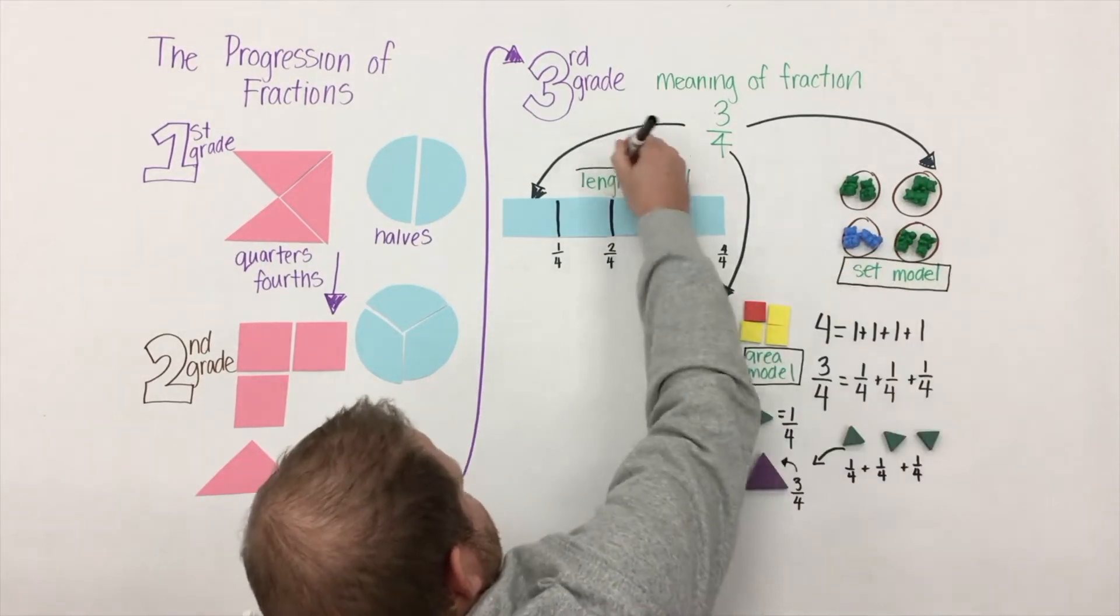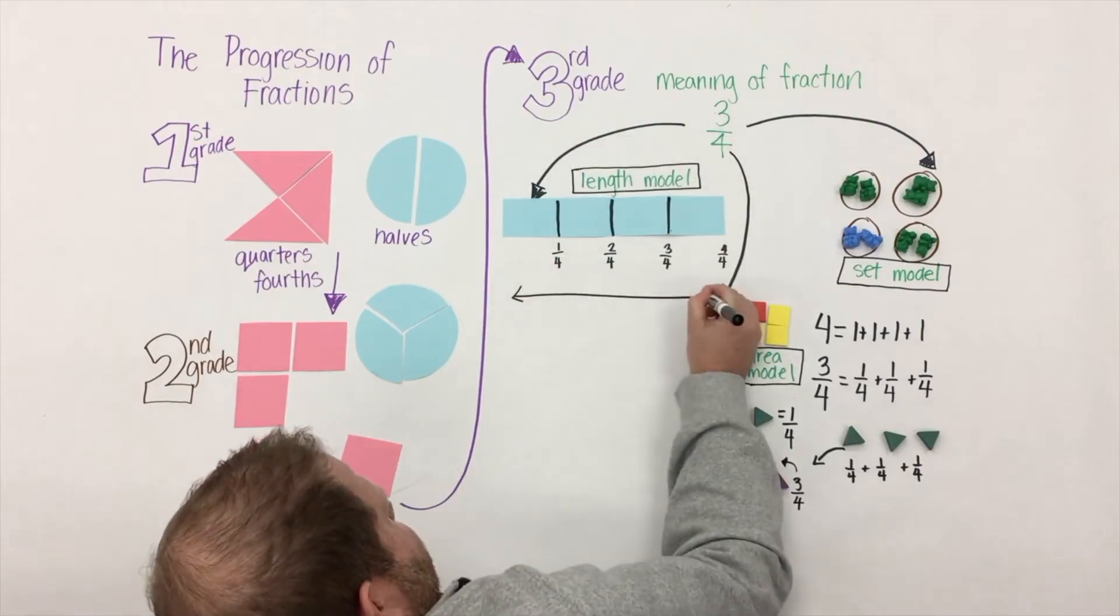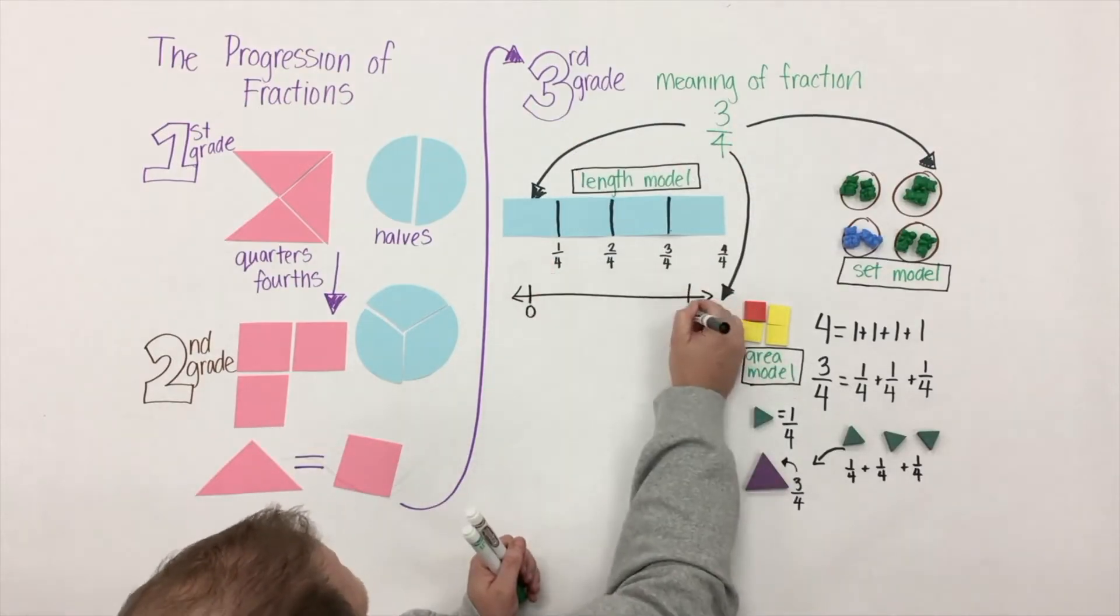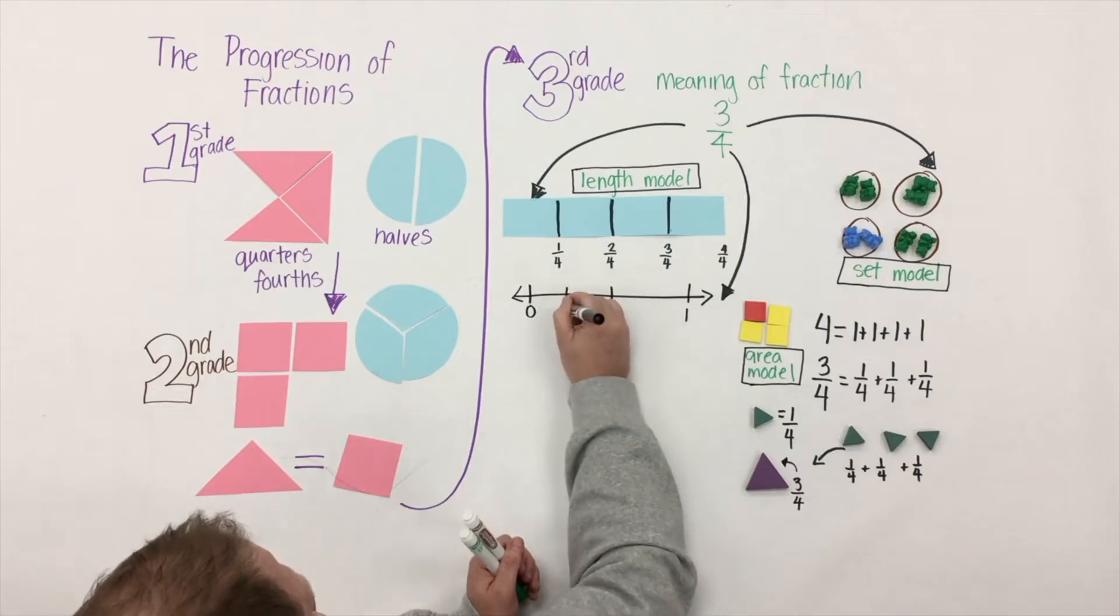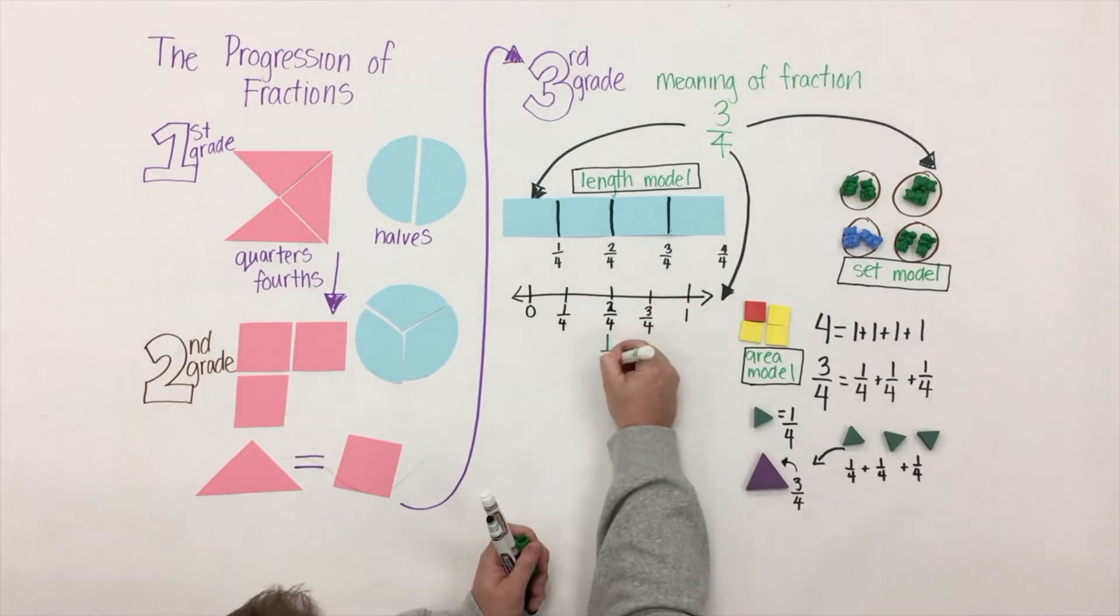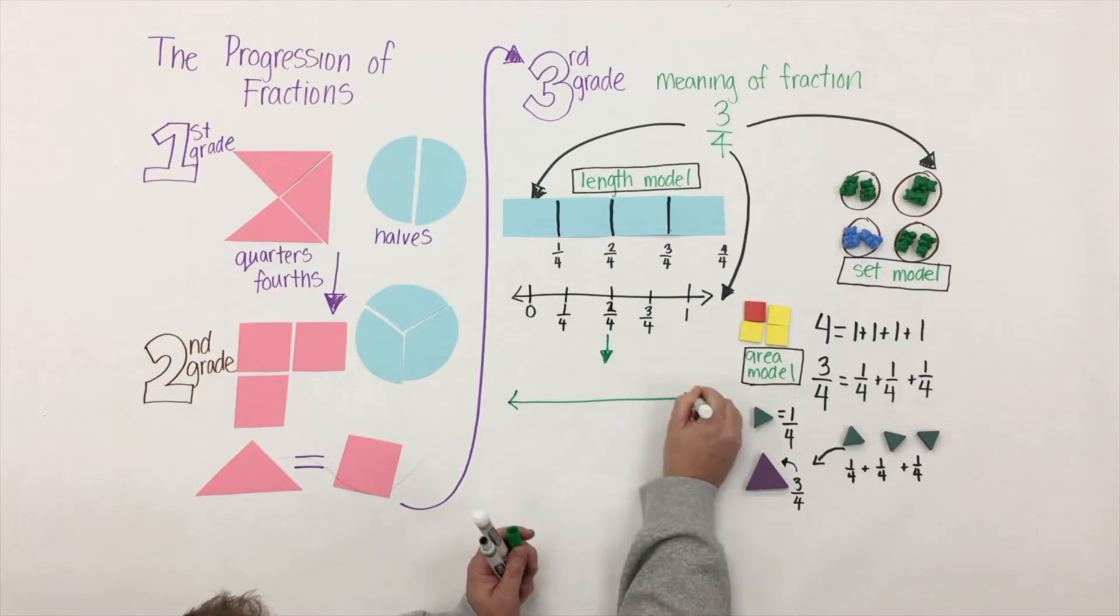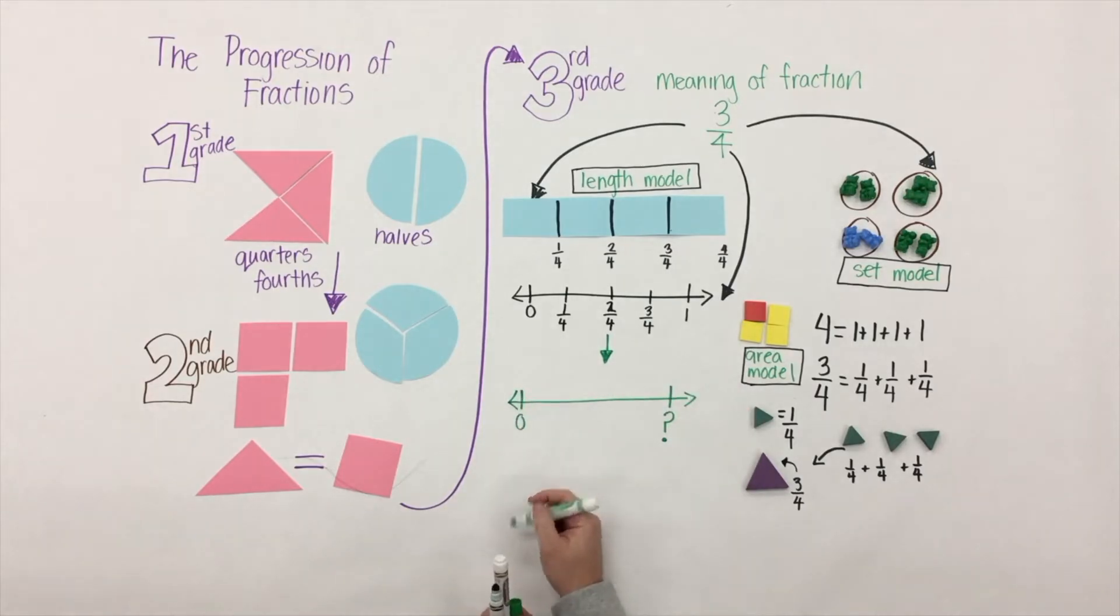Let's go back to that length model. Well, that length model is a really powerful tool because it helps build students' understanding, which can also be done through a number line. Here's another number line. What number is the question mark here? Let me help. Wait a minute, that's greater than one! Well, in third grade students need to see that fractions can also represent numbers greater than one.